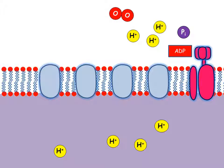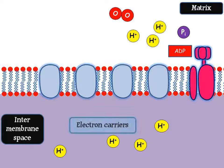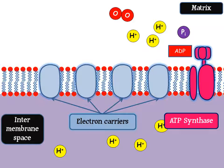The image on the screen shows the inner membrane of the mitochondria across the middle. On one side of the membrane you have the intermembrane space and on the other the matrix. Embedded in the membrane are electron carriers which are proteins, sometimes called cytochromes. On the right hand side you have ATP synthase, which is an enzyme.